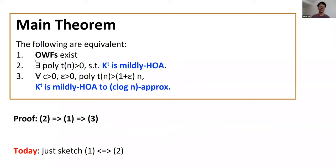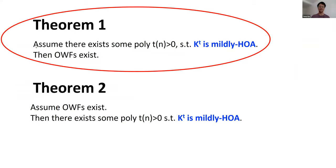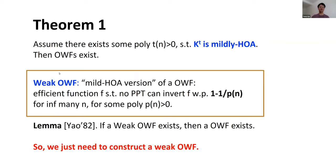In the paper we show that the second item implies the first, and the first implies the third, and the third trivially implies the second. For today we sketch the proof of equivalence between the first and second items. Theorem 1 says: assume there exists a polynomial t such that KT is mildly hard on average, then one-way functions exist. To show one-way functions exist, it suffices to show a weak one-way function exists. We say f is a weak one-way function if no PPT machine can invert f with probability 1 − 1/p(n) for infinitely many n and some polynomial p. By Yao's hardness amplification lemma, if a weak one-way function exists then a one-way function exists.